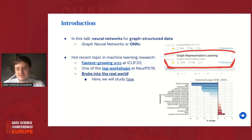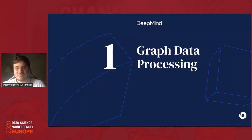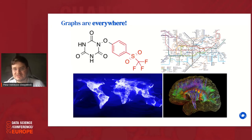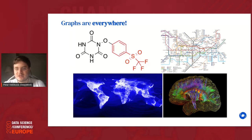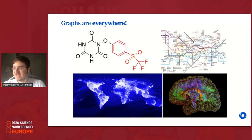Before we dive into applications, let's briefly discuss how we might process data that lives on a graph. Graphs are pretty much everywhere around us — most data from nature can be represented as a graph. Obvious examples include molecular graphs where atoms are nodes and bonds are edges, transportation networks like the London Tube map, social networks like the Facebook friendship graph, brain connectomes, and even images, text, and speech can be seen as special cases of a graph.